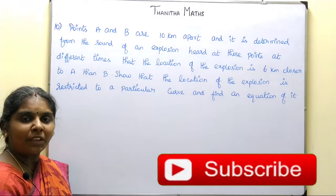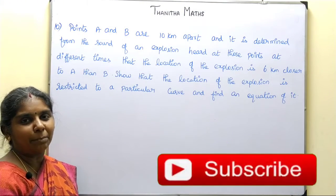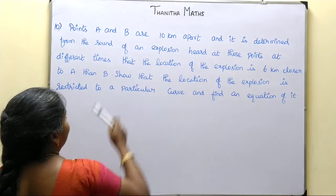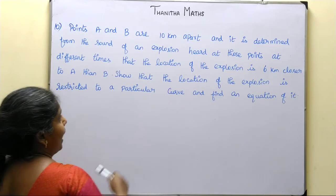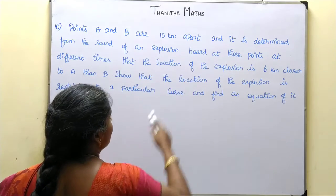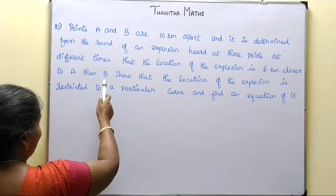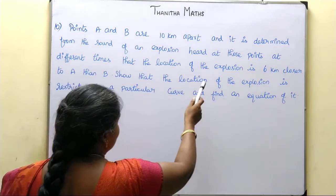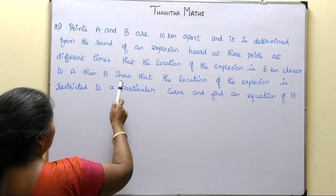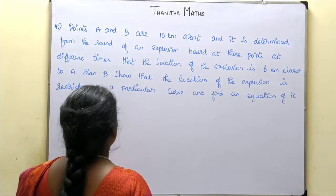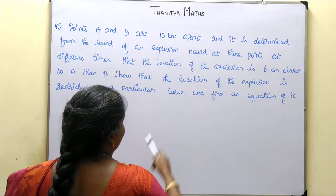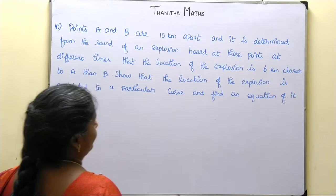Welcome students. Now we are going to talk about Exercise 5.5. Points A and B are 10 km apart and it is determined from the sound of an explosion heard at these points at different times that the location of the explosion is 6 km closer to A than B. Show that the location of the explosion is restricted to a particular curve and find an equation of it.